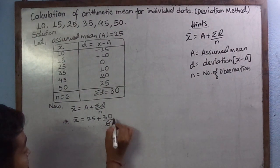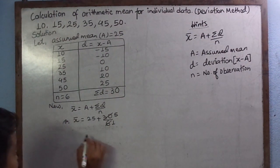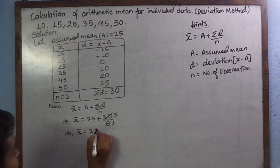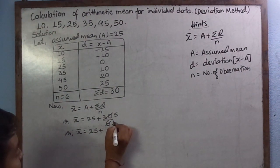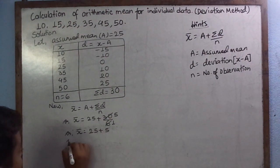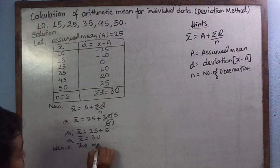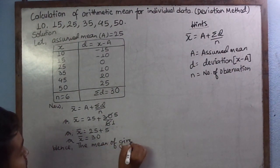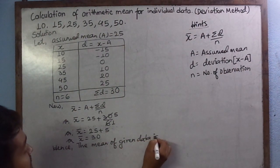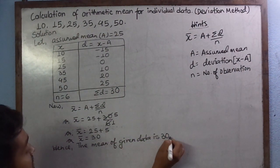6, 1 times 6. 6, 5 times is 30. Or mean equals to 25 plus 5 divided by 1 is 5. Or mean equals to 25 plus 5 is 30. Hence, the mean of given data is 30.